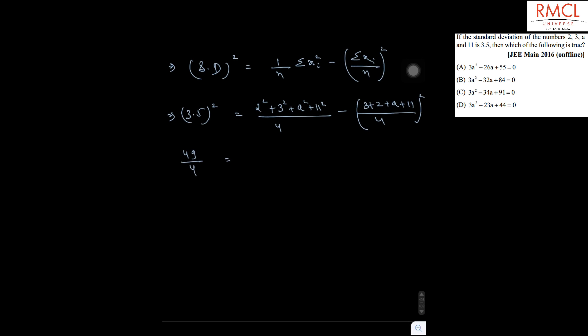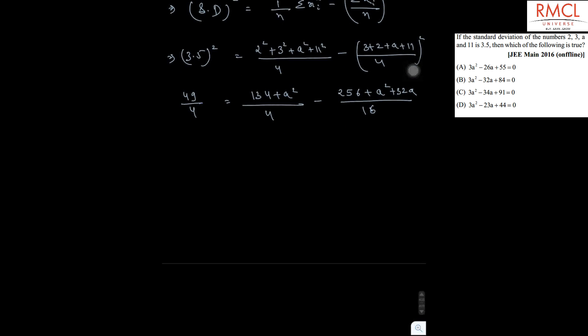So 49 by 4 is equal to 134 plus a square divided by 4 minus 256 plus a square plus 32a divided by 16. So 49 by 4 is equal to 4a square plus 536 minus 256 minus a square minus 32a.